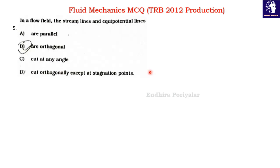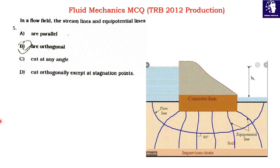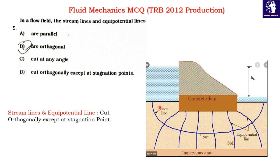Question 5: In a flow field, streamlines and equipotential lines are — parallel, orthogonal, cut at any edge, or orthogonal except at stagnation points. The flow lines and streamlines are orthogonal to the equipotential lines, except at stagnation points. The correct answer is orthogonal except at stagnation points.